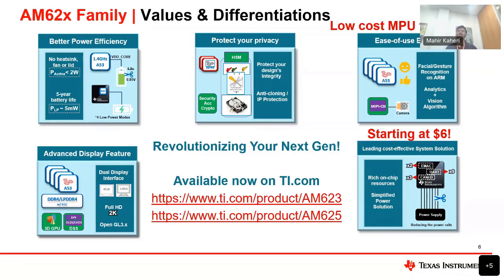On the right side, you can see we have very good ease-of-use edge AI. We have facial and gesture recognition on the ARM, and analytics and vision algorithms as well. AM62x is a very leading low-cost system solution with rich on-chip resources and a simplified power solution. AM62x's starting price is at $6, and you can use it to revolutionize your next generation system and solution. It's available right now on ti.com, and you can look at the AM623 or AM625.